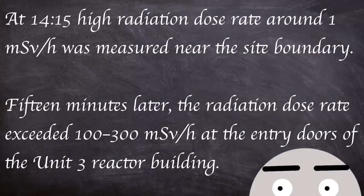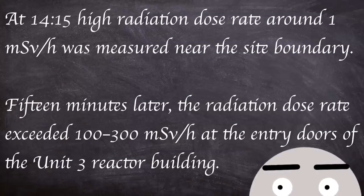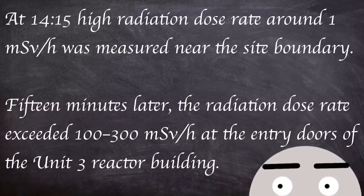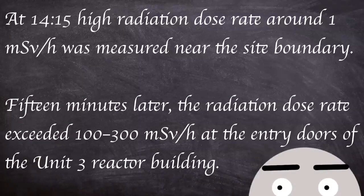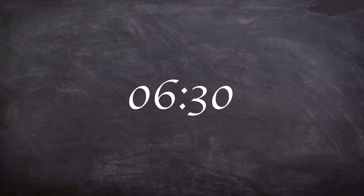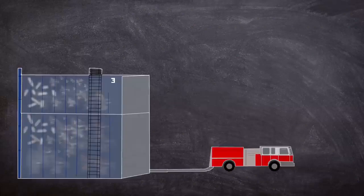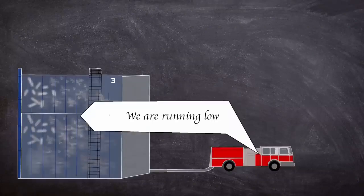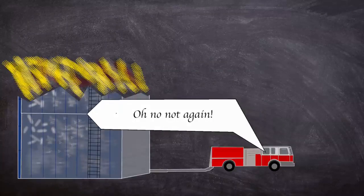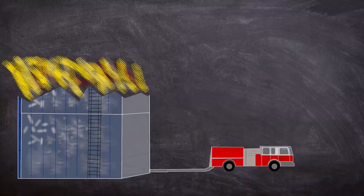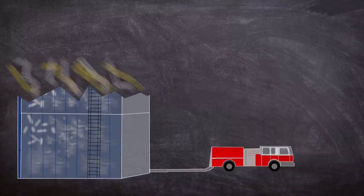At 2.15 pm high radiation dose rate of around one millisieverts an hour was measured near the site boundary. 15 minutes later the radiation dose rate exceeded 100 to 300 millisieverts an hour at the entry doors of the unit three reactor building. At 6.30 am on the 14th the water level in unit three dropped as cooling water supplies that were being pumped began to dwindle. At 11.01 am an explosion occurred in the upper part of the unit three reactor building similar to what happened at unit one destroying the structure above the service floor.